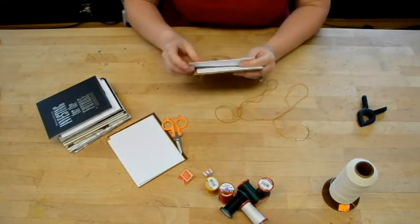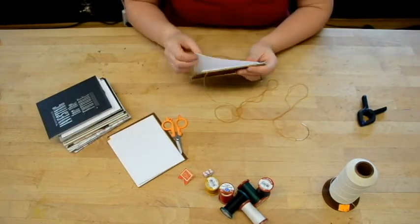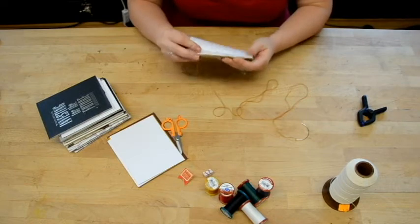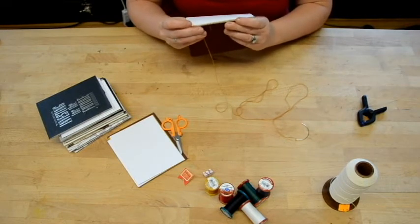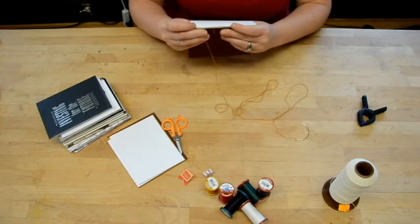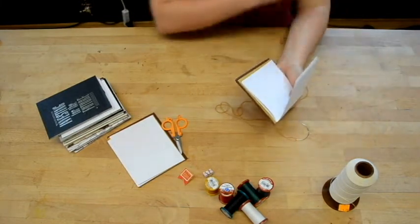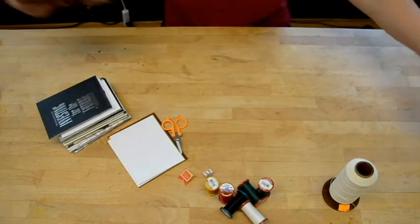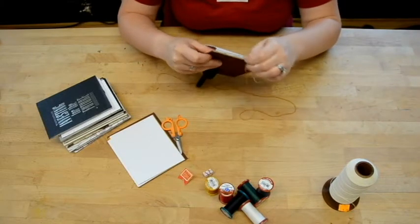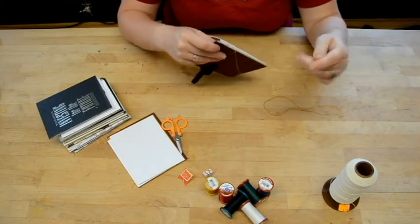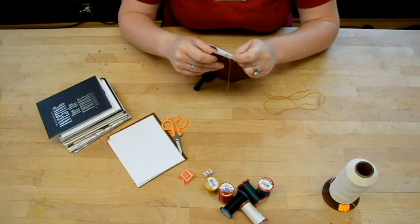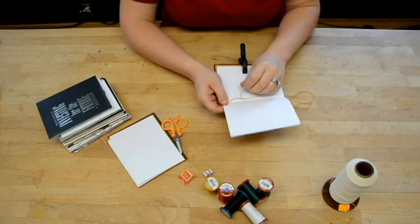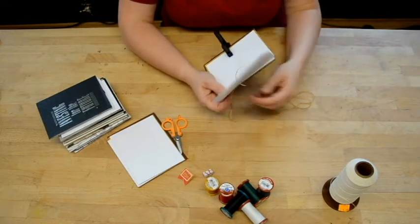So now you take your next signature and you line up the holes, open it to the center point. Again, this is where a clip is not essential, but it is handy. It's just one less thing to pay attention to once you go. So you did your wrap on that fourth hole. But instead of going back inside, you will go inside the corresponding hole of the new signature. So you go inside and then you will immediately come out the next hole in that signature.